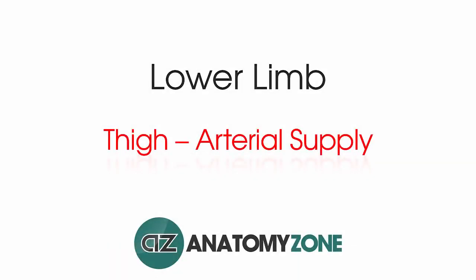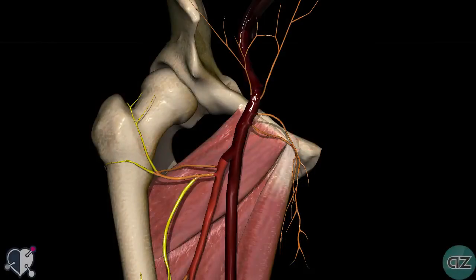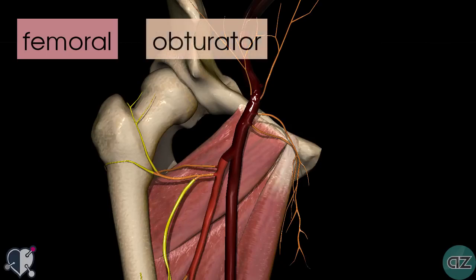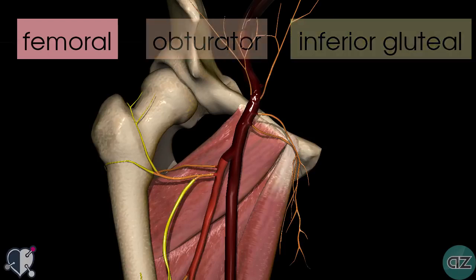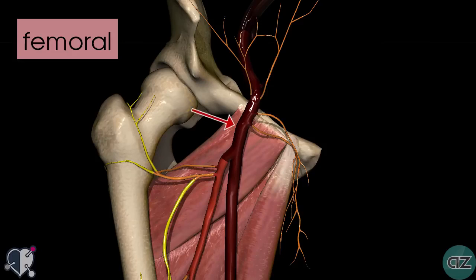Hi, this is Peter from AnatomyZone and in this tutorial we're going to take a look at the arterial supply to the thigh. There are three arteries which supply the thigh: the femoral artery, the obturator artery, and the inferior gluteal artery. The obturator and inferior gluteal arteries are branches of the internal iliac artery, covered in the previous tutorial. The femoral artery is the largest branch entering the thigh and supplies most of the lower limb, so in this tutorial we're going to focus on its various branches.